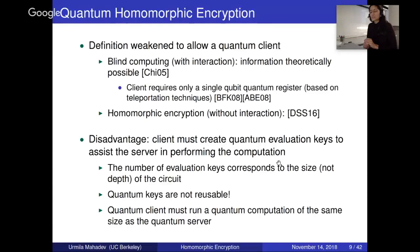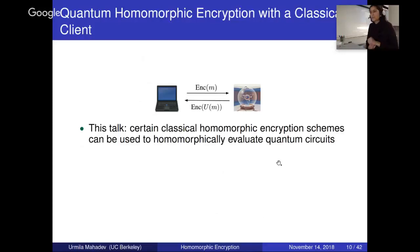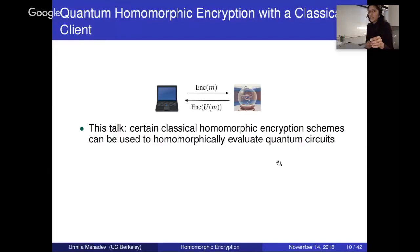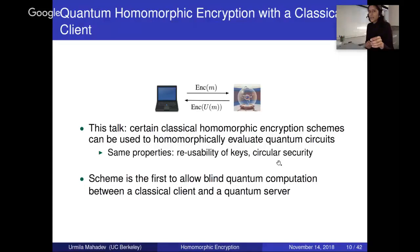I'm going to show that classical client delegation is possible. There are certain classical homomorphic encryption schemes which can be used to homomorphically evaluate quantum circuits. If classical homomorphic encryption schemes satisfy certain properties, we can get around the obstacles. The keys are of course reusable — no issues like with the quantum client — and for those who know, I can also get circular security to obtain a pure fully homomorphic encryption scheme. This is the first scheme to allow blind quantum computation between a classical client and a quantum server, since in all previous schemes we used quantum clients.